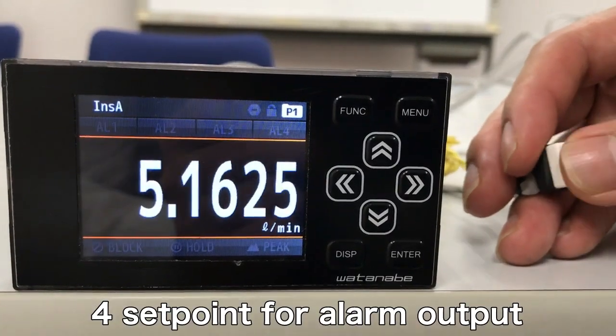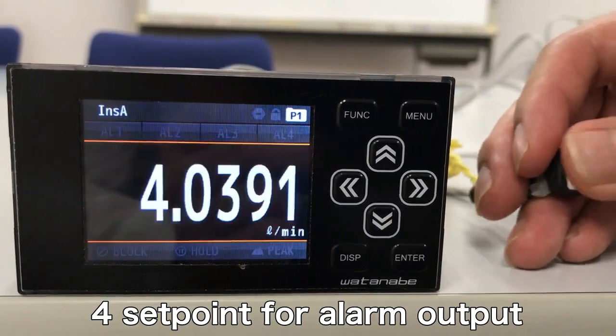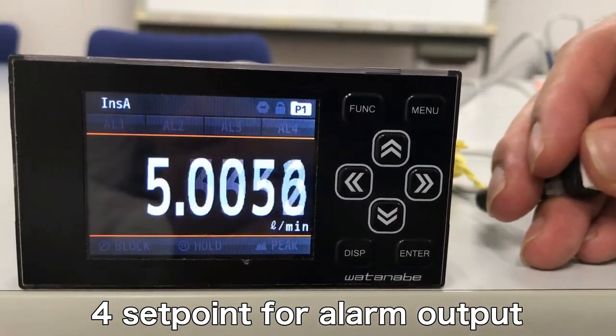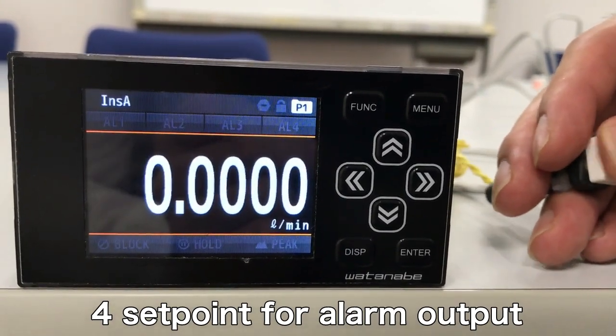WPMZ has a four point high and low setting. When you get to alarm, you can change backlight like this. Now red. And the other, we have green and yellow.